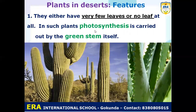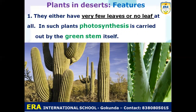The first feature of desert plants is that they either have very few leaves or no leaves at all. In such plants, the photosynthesis process — by which plants use sunlight to make their food — is carried out by the green stem. So in desert plants, there are no leaves, but photosynthesis is carried out by the green stem.